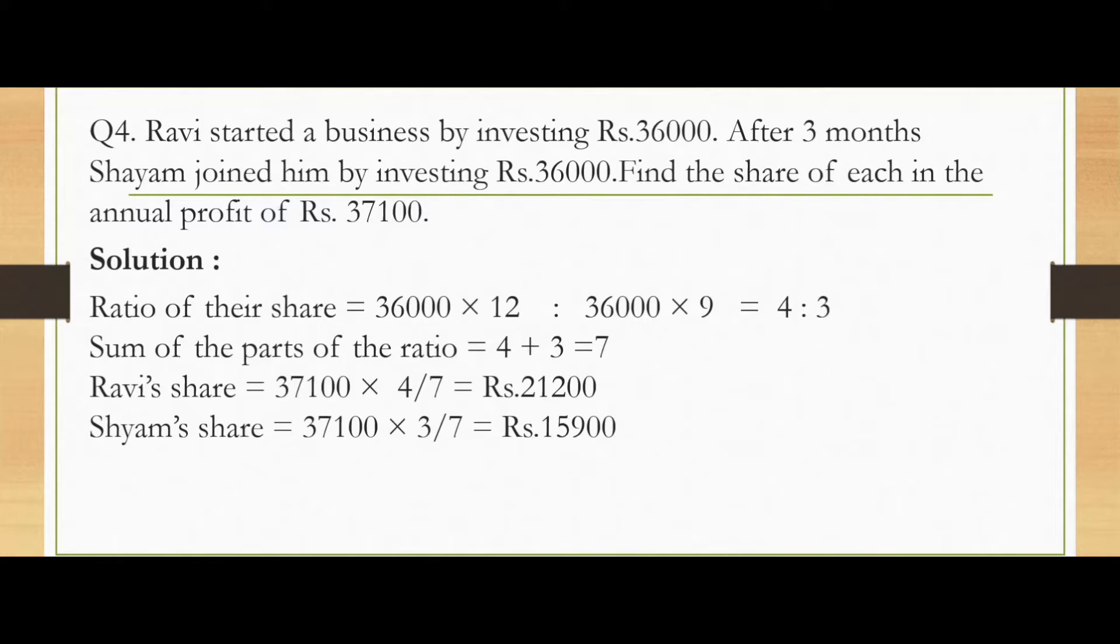We can easily calculate the share of each partner. So Ravi's share will be 37,100 into 4 by 7 which will come to Rs.21,200. And Shyam's share will be 37,100 into 3 by 7 which will come to Rs.15,900.